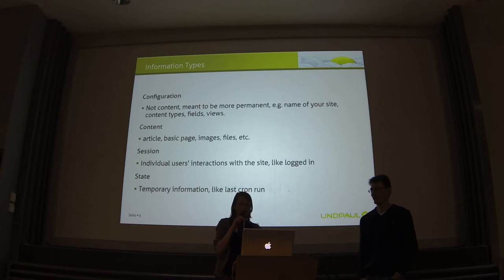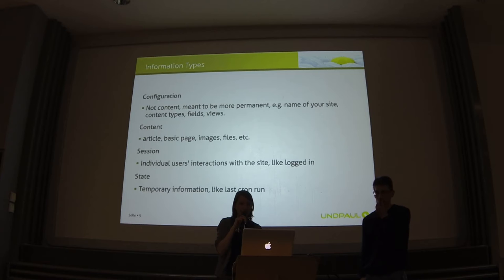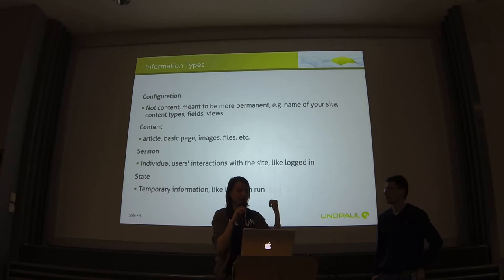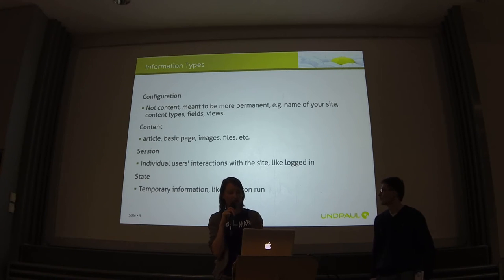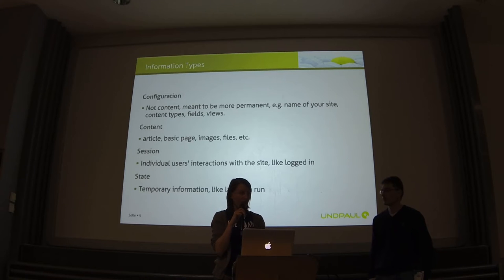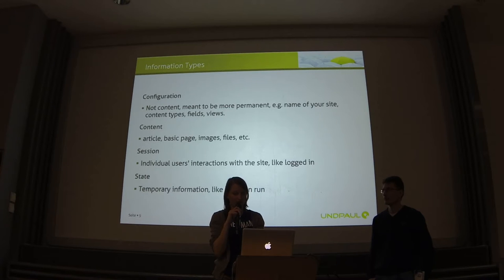Content is everything that's not configuration and will not be in code — images, files, nodes, articles, basic pages. That means nodes, not the content type. There's also sessions and state stuff that you don't need in configuration. Same as with features, you don't want the last cron run in your code because it changes all the time.